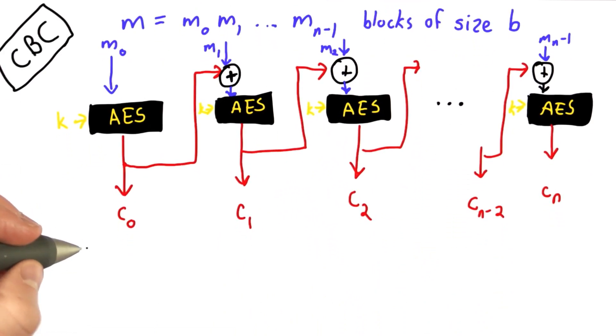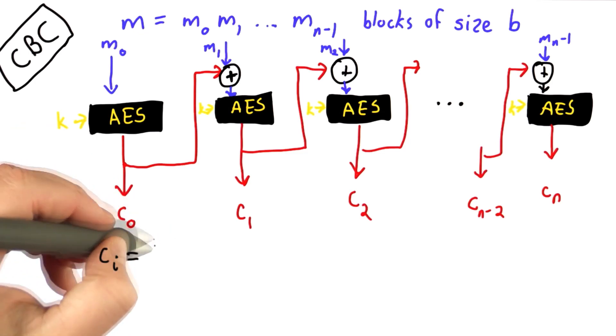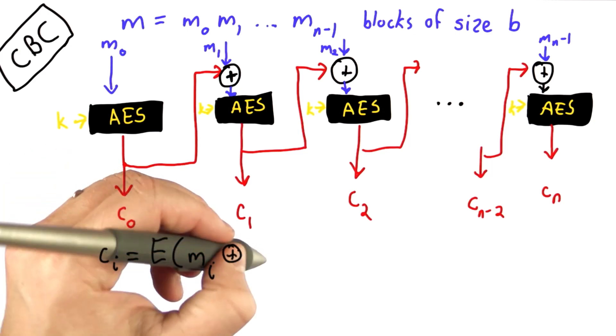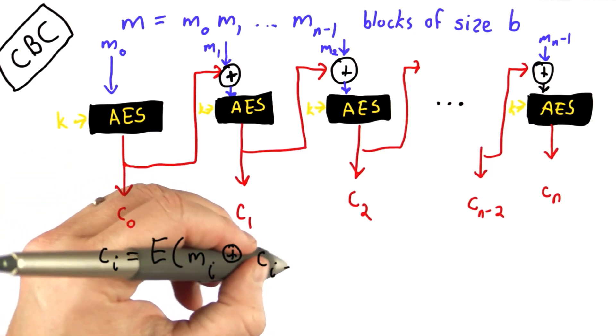This means that the result in CBC, or cipher block chaining mode, the Ith encrypted block is the result of encrypting the XOR of the Ith message block with the I minus 1th encryption block.